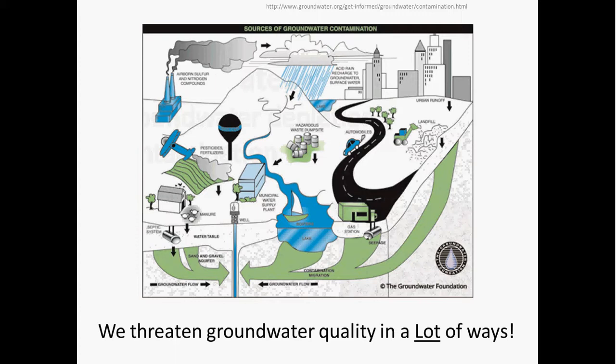Man-made products such as gasoline, oil, road salts, and other chemicals can migrate through soils and ultimately find their way into groundwater, causing it to become unsafe and unfit for human use. Many of these human sources of contamination are illustrated in an image from the Groundwater Foundation. Potential sources of groundwater contamination can include storage tanks.